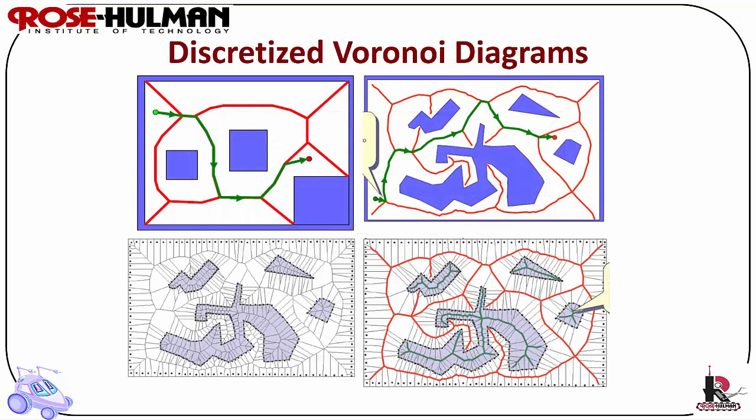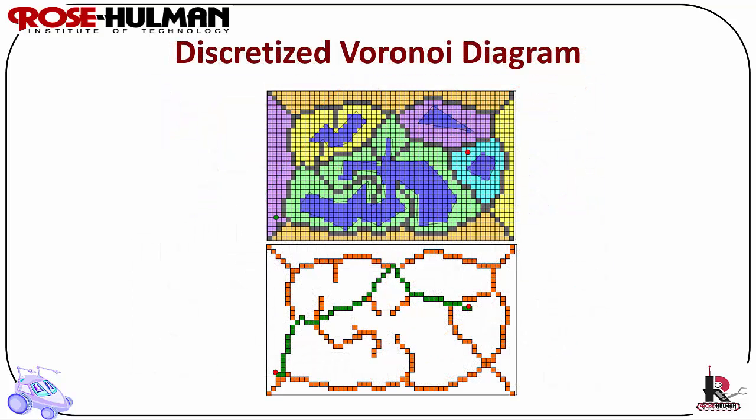We can also have discretized Voronoi diagrams. Here is an example of converting a continuous Voronoi diagram to a discrete Voronoi diagram created from a robot taking discrete measurements or a tessellation of the space. And here are a couple more examples.